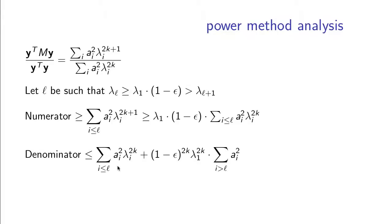For the denominator, we separate the terms where lambda_i is more than 1 minus epsilon times lambda_1 from those where lambda_i is smaller. For the terms where lambda_i is smaller, lambda_i to the 2k will be upper bounded by lambda_1 to the 2k times (1 minus epsilon) to the 2k. The key point is that this part of the sum goes to 0 when k is large. If this quantity were in fact 0, then the ratio between the numerator and denominator would be at least lambda_1 times 1 minus epsilon, which is what we wanted.